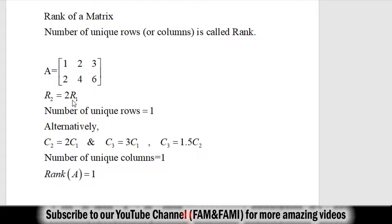If a row in a matrix depends upon any other row then we say that that row cannot be unique. A similar definition holds for columns — if a column in a matrix depends upon any other column then that column cannot be considered a unique column.